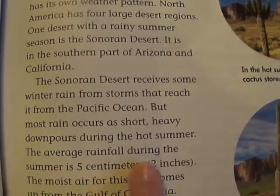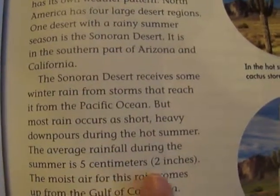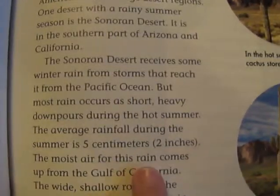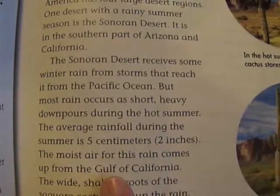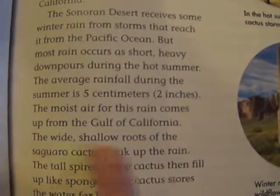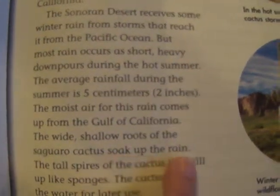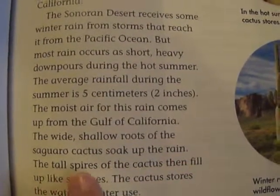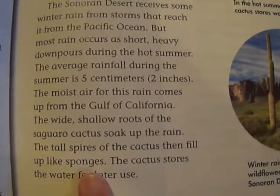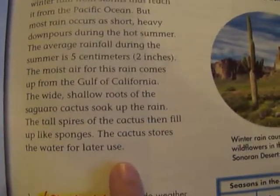The average rainfall during the summer is five centimeters, about two inches. The moist air for this rain comes up from the Gulf of California. The wide, shallow roots of the saguaro cactus soak up the rain. The tall spires of the cactus then fill up like sponges, and the cactus stores the water for later use.